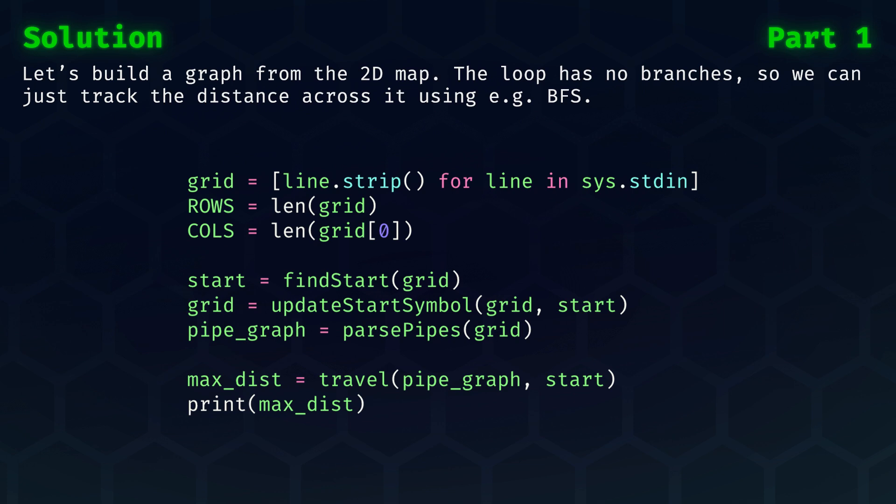The outline then looks as follows. First, we take in the grid from standard in, and for convenience, we store the number of rows and number of columns. Then, let's first find the starting position, and we'll replace the letter S with the actual pipe symbol that it represents.